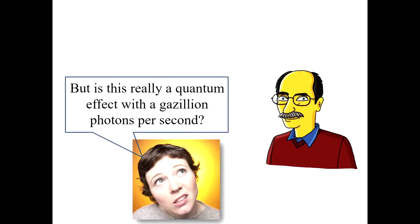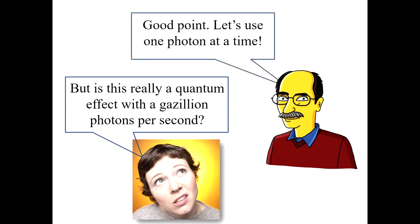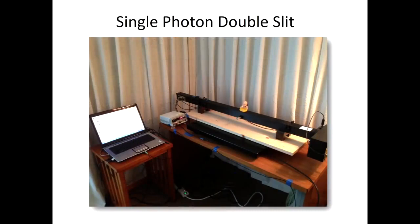So now a skeptic could say, but is this really a quantum effect given that you're dealing with a gazillion photons per second with a continuous beam laser? To which I replied, that's a good point. Let's do the same experiment, one photon at a time. So we used a commercial system. It's a little over a meter long. And you can shoot a single photon at a time and then see whether or not you get interference with the double slit system. On the right end of that long chamber is a photomultiplier, and that's what detects the single photons.